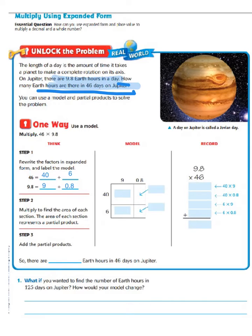First we're going to find our first column of numbers. We take our 40 and multiply it by our 9 ones. We know that 9 times 4 is 36, and we add our 0, so our answer for that box is going to be 360. Our next one is to take our 6 ones and multiply it by our 9 ones. 6 times 9 is 54, so in our second box we're going to put 54.